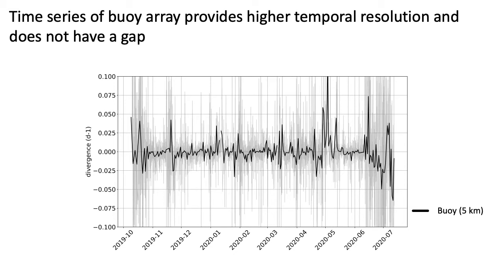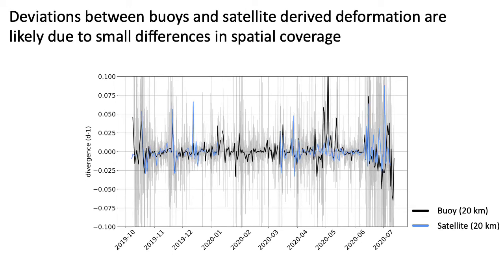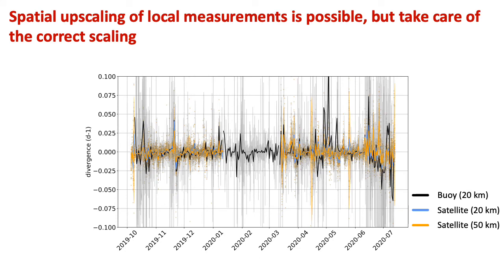The buoys have another advantage: they don't have a data gap. On the other side, they cannot provide high spatial resolution as satellites can. Therefore, we combine the information from both. This version of the plot shows the buoy and the corresponding satellite-derived deformation together. There are parts where they agree really well, while they deviate, especially in the summer months. Here, a combination of small differences in spatial coverage and increasing uncertainty in the SAR data most likely caused the deviation. Putting it all together leaves us with a messy graph, but also with a complete picture of deformation on different spatial and temporal scales.